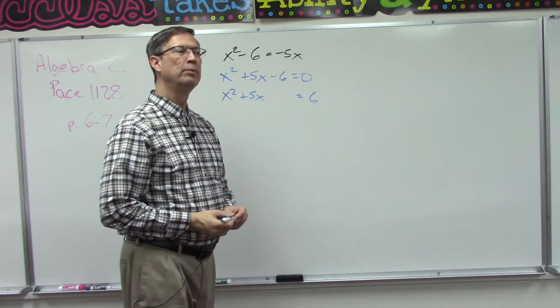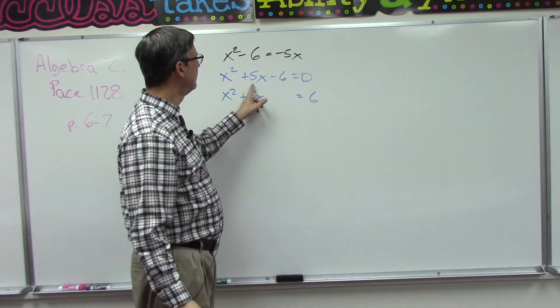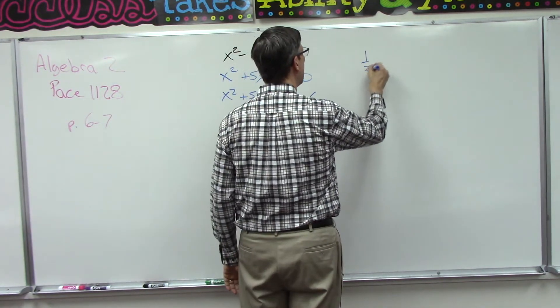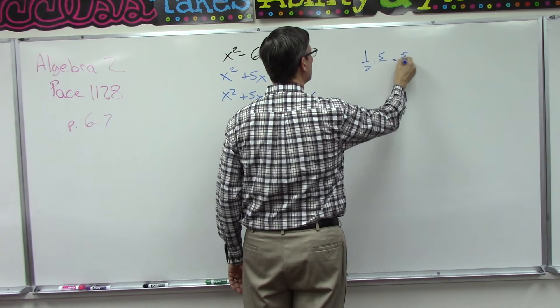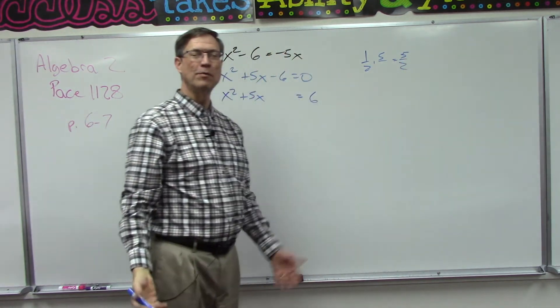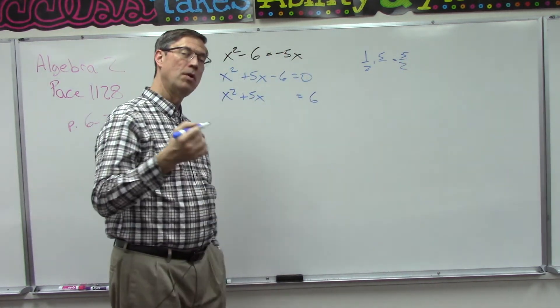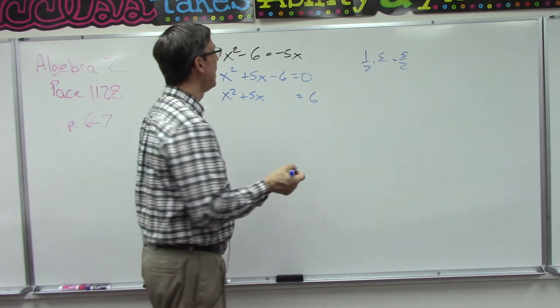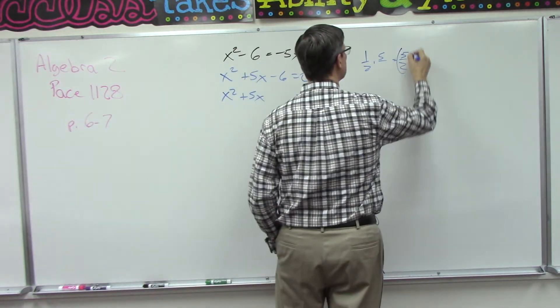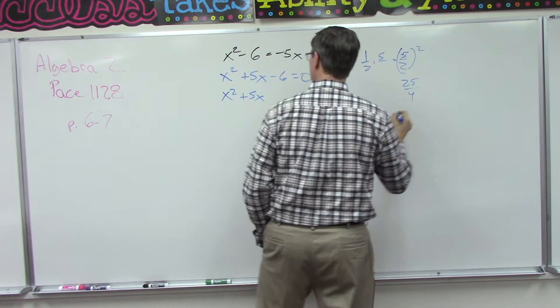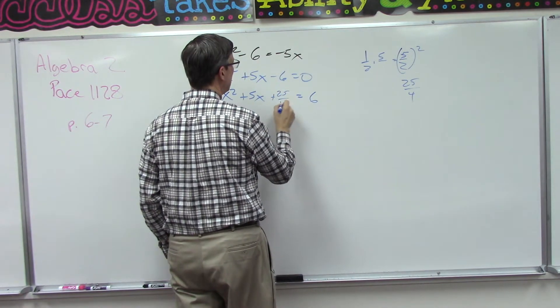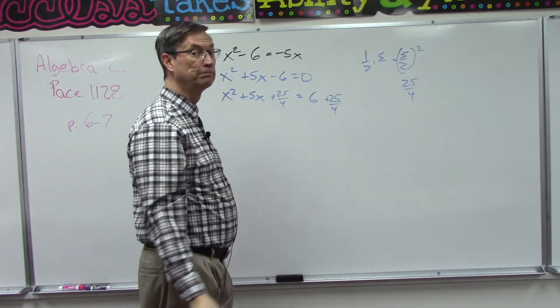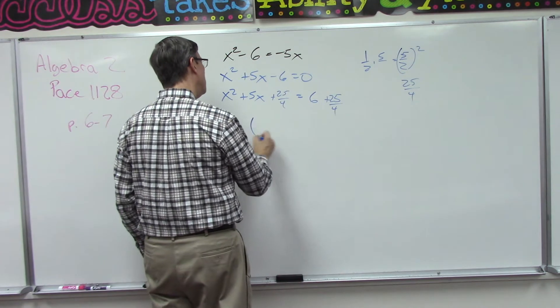Now here's the rule for completing the square. We're going to take half of this middle term. So what is half of 5? Half times 5 equals 5 halves, 5 over 2. But the whole point is we're going to square that. So half the middle term squared, and then we add that to both sides. So that gives us 25 fourths. So we're going to add 25 fourths here and add 25 fourths over there.